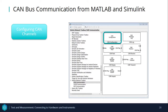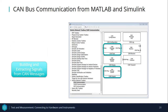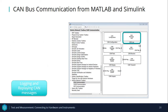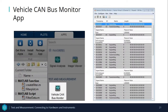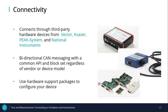The Vehicle Network Toolbox lets you interact directly with a CAN bus from MATLAB or Simulink. You can execute toolbox functions from the MATLAB command line and through MATLAB programs. The toolbox also contains Simulink blocks that enable you to connect a Simulink model to a CAN bus. The Vehicle CAN bus monitor displays live CAN message traffic. You can use the CAN tool to view message traffic using a selected CAN device and channel, and save messages to a log file. In terms of connectivity, you can connect through third-party hardware devices with a common API and block set regardless of vendor for bidirectional CAN messaging, configured via hardware support package wizards.